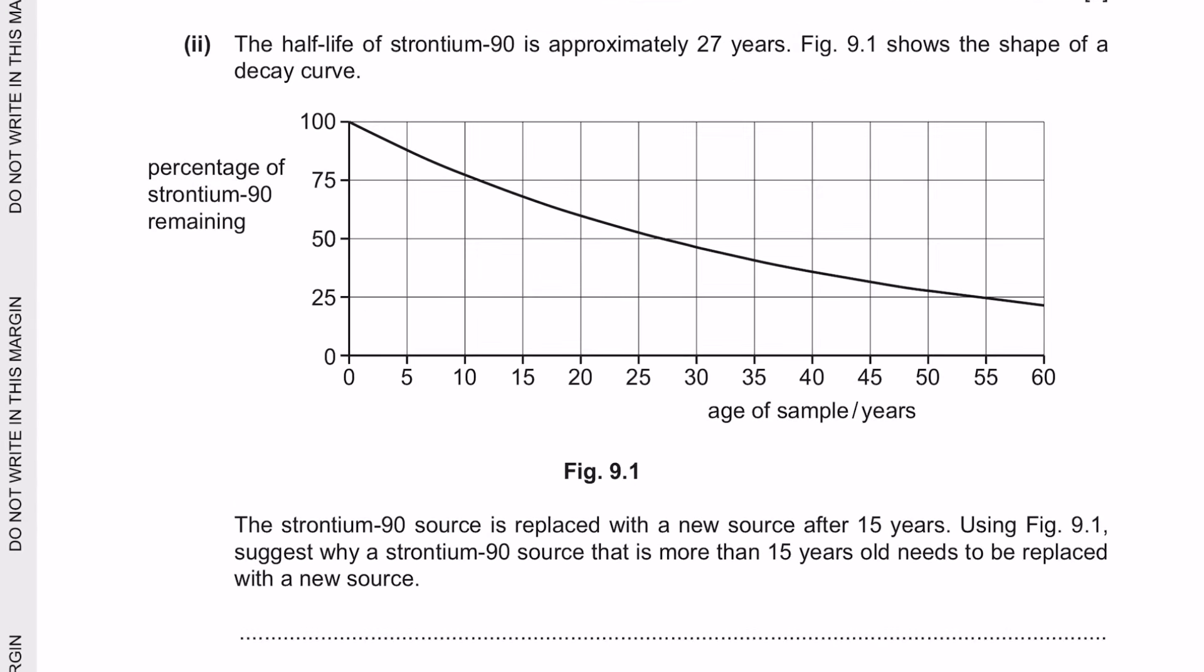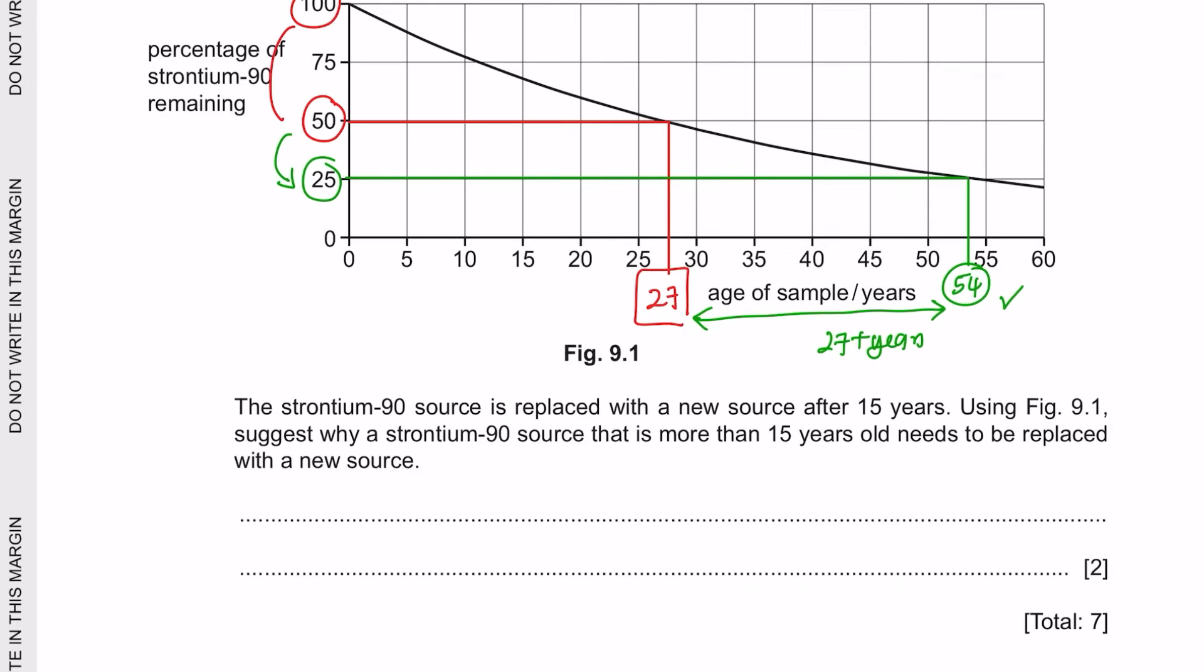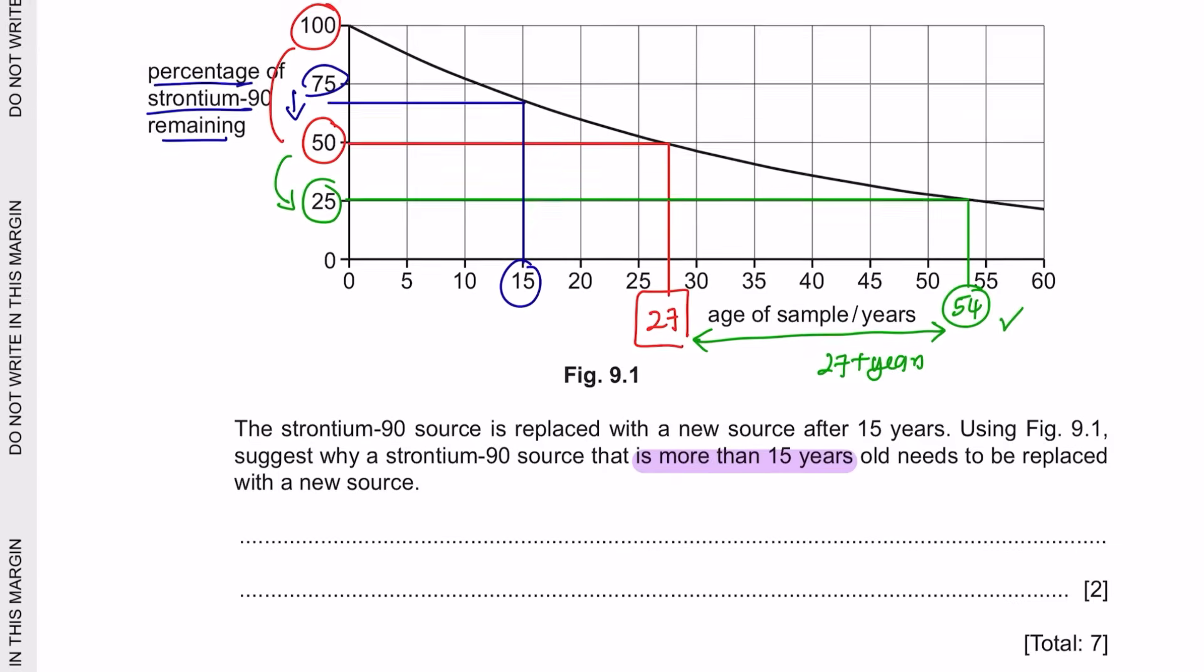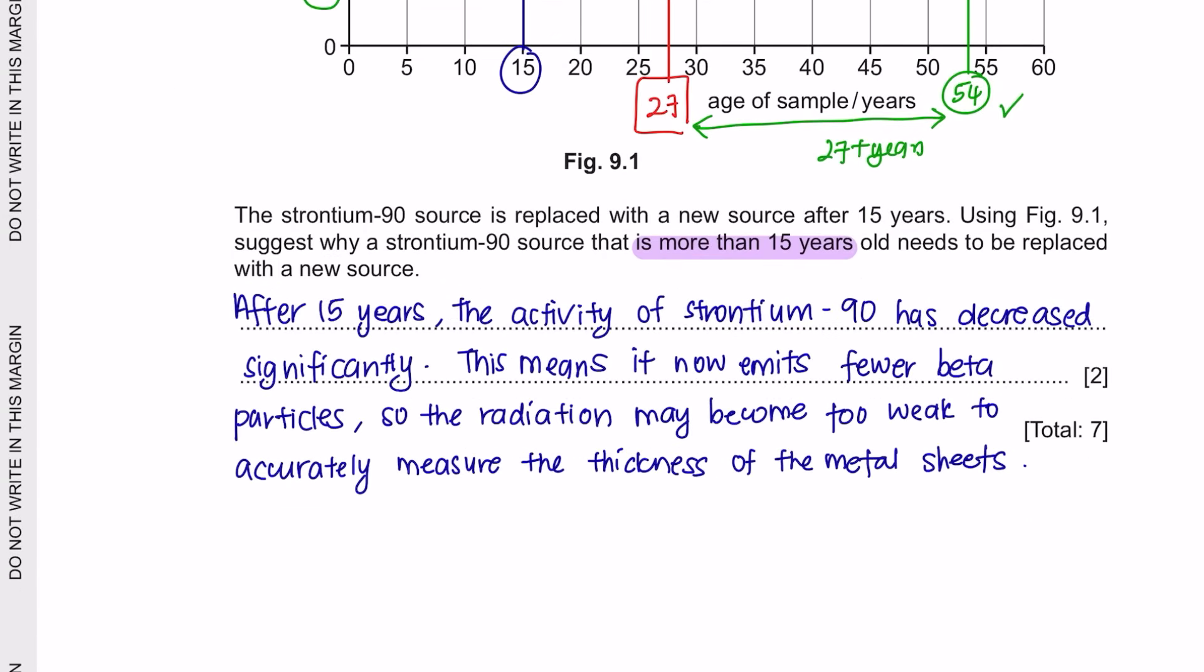Next question part 2. The half-life of strontium-90 is approximately 27 years. So for strontium to become half which is 50, it would take 27 years. And halving 50 into 25, that would take another 27 years. So it's 54 years later. The strontium-90 is replaced with a new source after 15 years. Using figure 9.1 suggest why a strontium-90 source that is more than 50 years old needs to be replaced with a new source. Let's look at our graph. At 15 years, the percentage of strontium-90 remaining is less than 75%. So if it's less than 75%, then the radiation may become too weak, so there will be fewer beta particles emitted. So this means that now, it might not measure the thickness of the metal surface accurately.